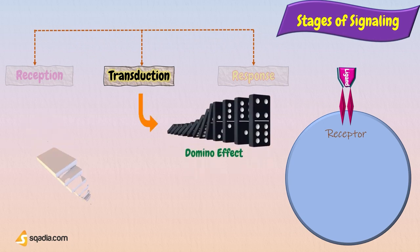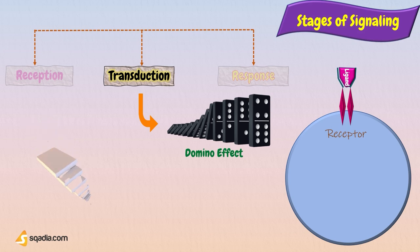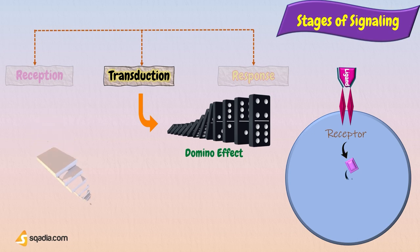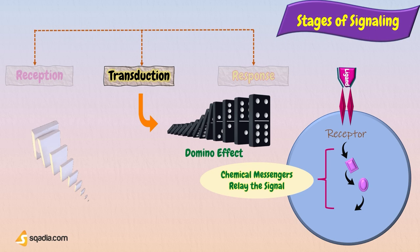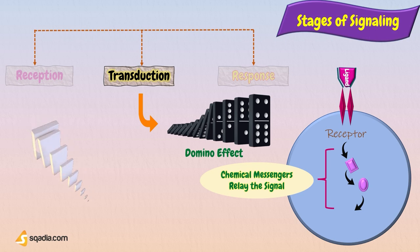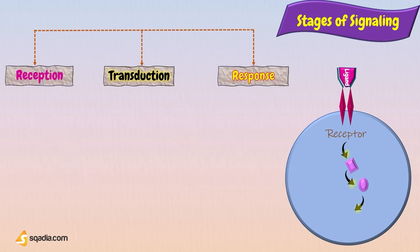The second stage is transduction. When the signaling molecule binds to the receptor, it changes the receptor protein. This change in the receptor sets off a series of events like a domino effect. Each relay molecule in the signal transduction pathway changes the next molecule in the pathway. Ultimately, the final target protein is activated.